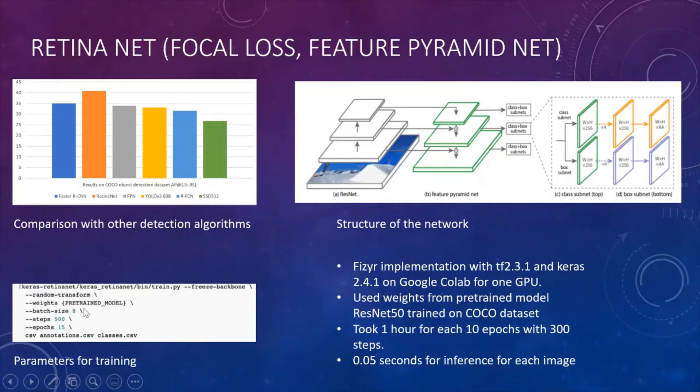When we were training, we applied these parameters for the training. We trained RetinaNet with TensorFlow 2.3 and Keras 2.4 on Google Colab. We used Fizyr implementation. We applied transfer learning. So transfer learning is reusing weights from the previous pre-trained model, or just reusing weights from our own model by creating checkpoints and then reusing the weights that were generated through that checkpoint. It took about 1 hour for each 10 epochs with 300 steps. And it took about 0.05 seconds for inference.